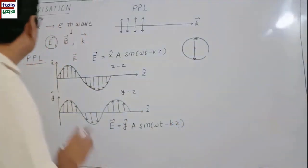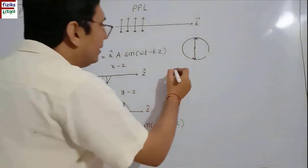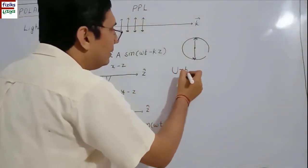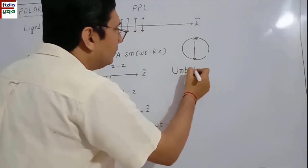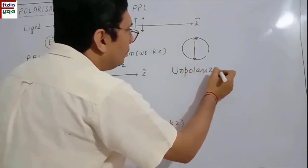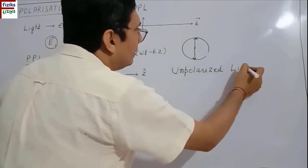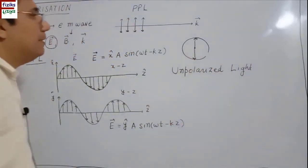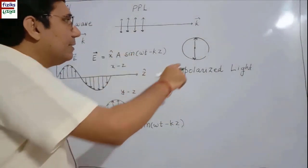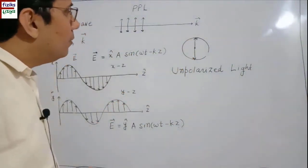Now a question arises: if this is plane polarized light, then what is the meaning of unpolarized light? In the case of plane polarized light, we have electric vectors in a particular direction.